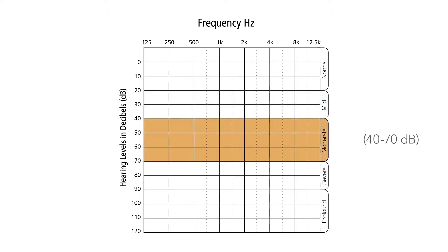At moderate, hearing levels will range from 40 to 70 decibels. If you reach this level, hearing speech in a noisy environment or at gatherings is often difficult, and you may find yourself asking people to repeat themselves.